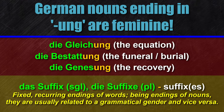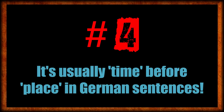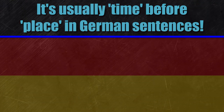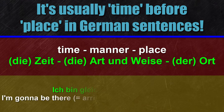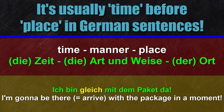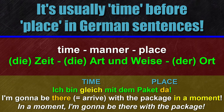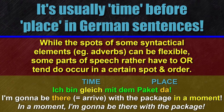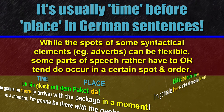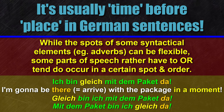I've also made individual lessons for each article and which suffixes they relate to, so feel free to check out those videos too. Number four: it's usually TIME BEFORE PLACE in German sentences. The rule of thumb is TIME — MANNER — PLACE: WHEN, HOW, WHERE. For example: 'Ich bin gleich mit dem Paket da.' GLEICH is a temporal adverb meaning 'in a moment,' and DA means 'there' — a local adverb. So TIME (gleich) comes before PLACE (da). It's the other way around in English sentences. The German word order is partially flexible — for instance, you could put the temporal information at the beginning: 'Gleich bin ich mit dem Paket da.' The focus shifts, yet it's still TIME BEFORE PLACE.